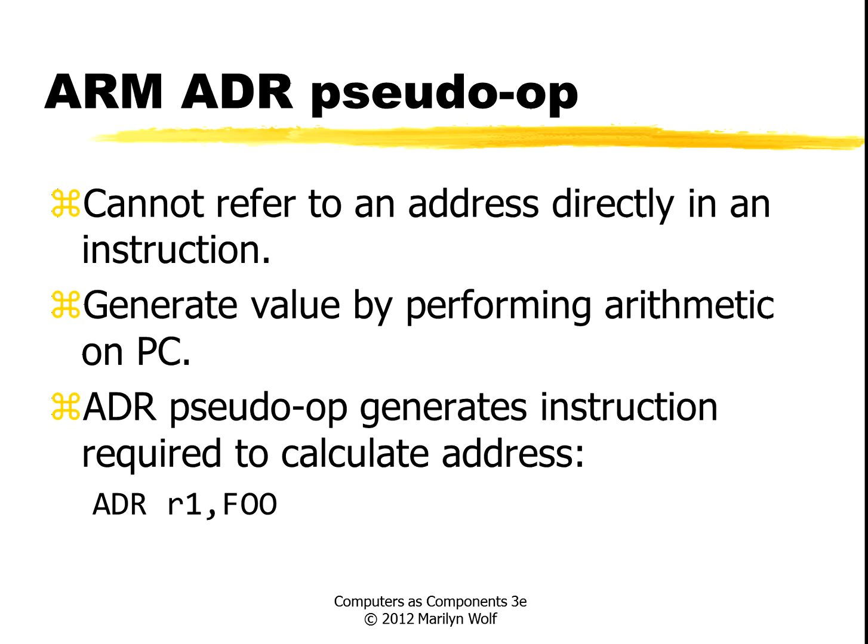The ADR pseudo-op is one interesting aspect of ARM assembly language. You cannot directly refer to an address in an instruction. Instead, you generate the value of an address by performing arithmetic on the program counter. The ADR pseudo-op lets you express this in a general way that doesn't require writing non-obvious code. For instance, ADR will take the address of a label like 'foo' and put that value into a register.